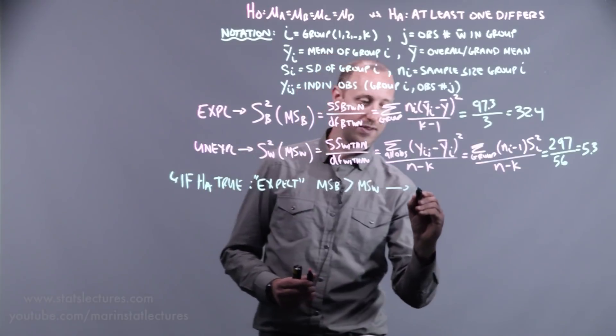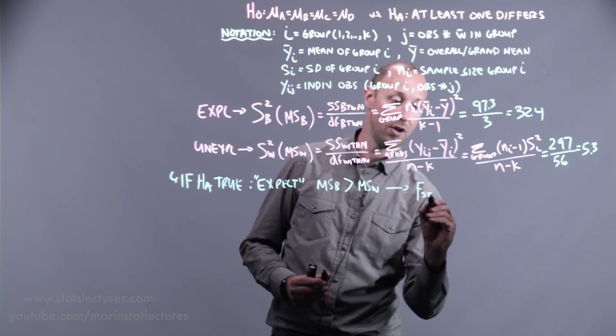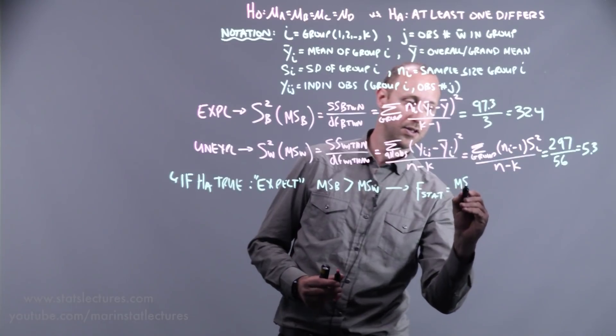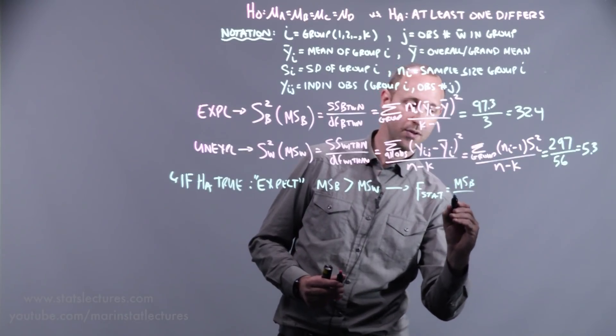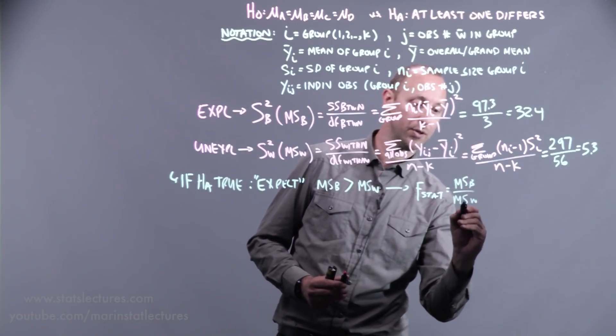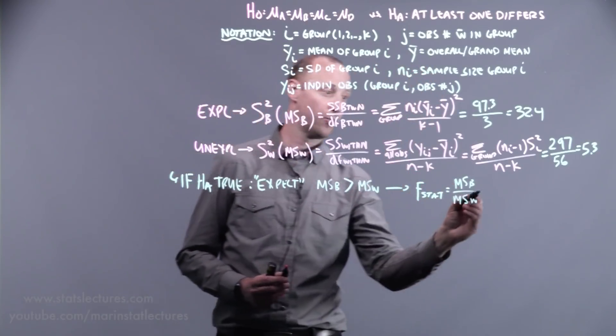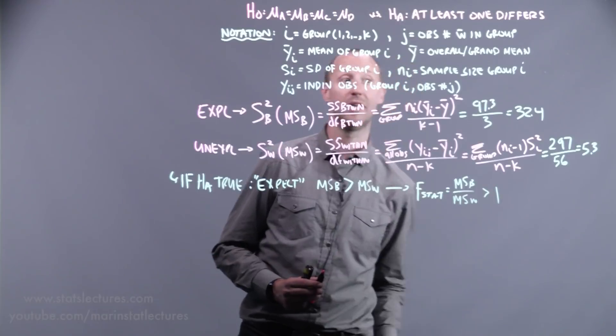If we take a ratio of these, and this is going to be what we call our F statistic, our test statistic, the mean square between groups over the mean square within groups. If we expect the top to be larger than the bottom, we expect this test statistic to be larger than one.